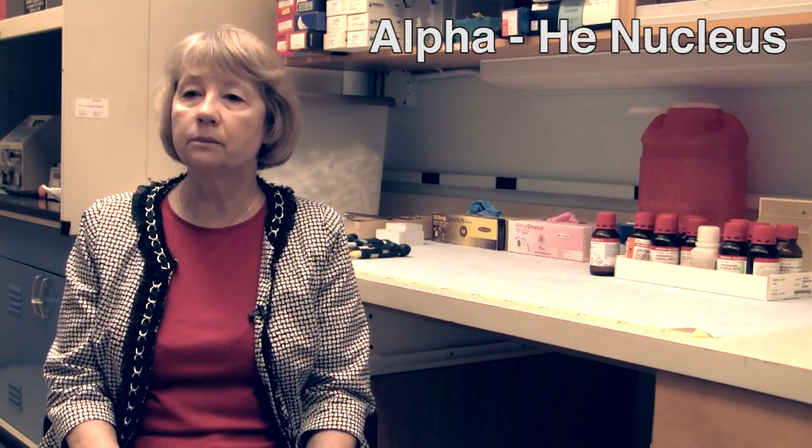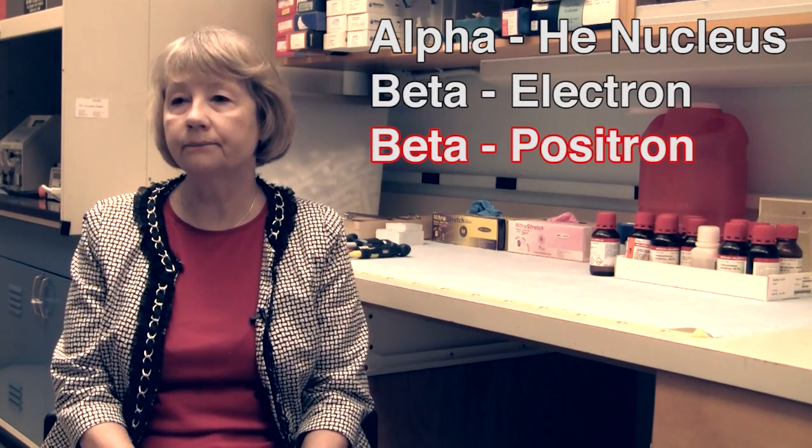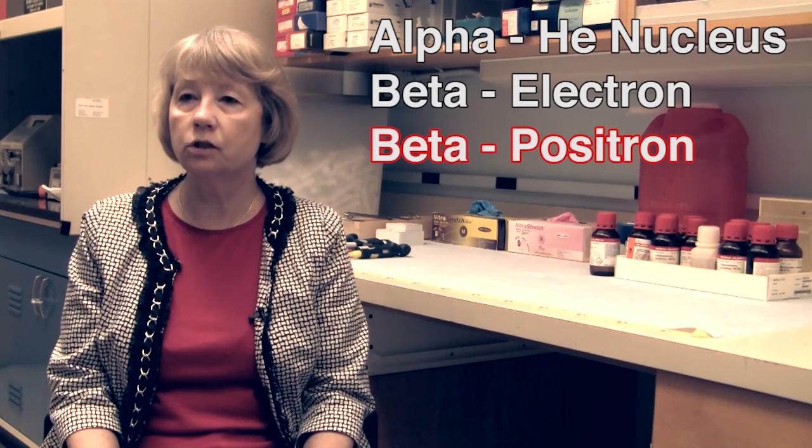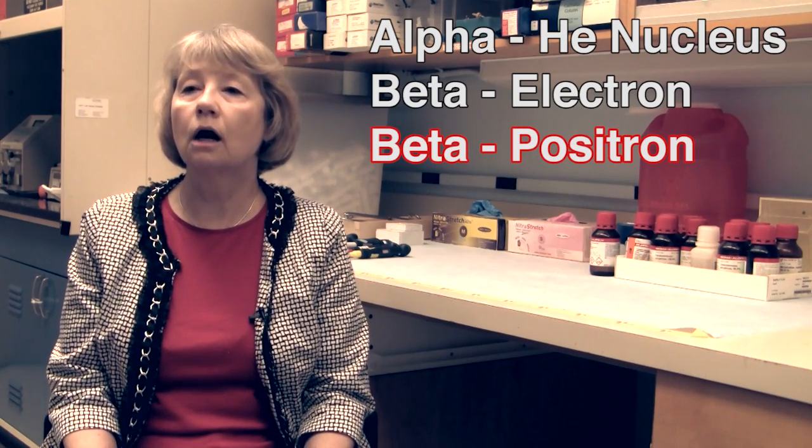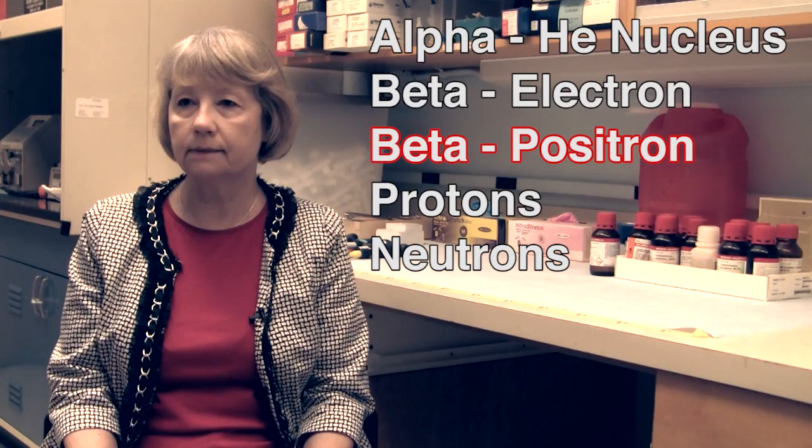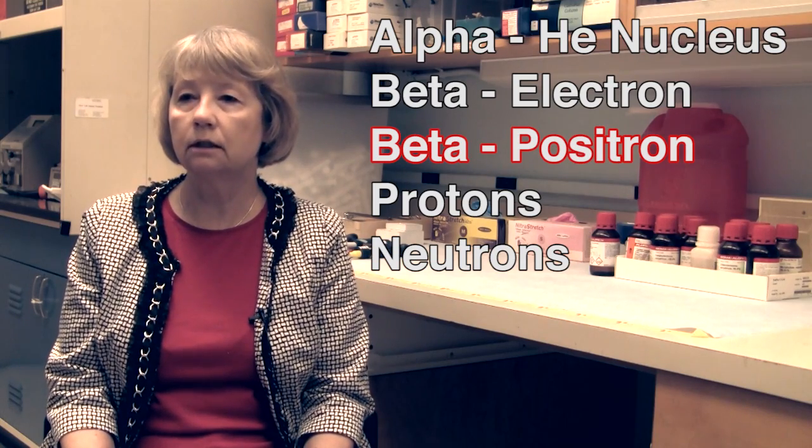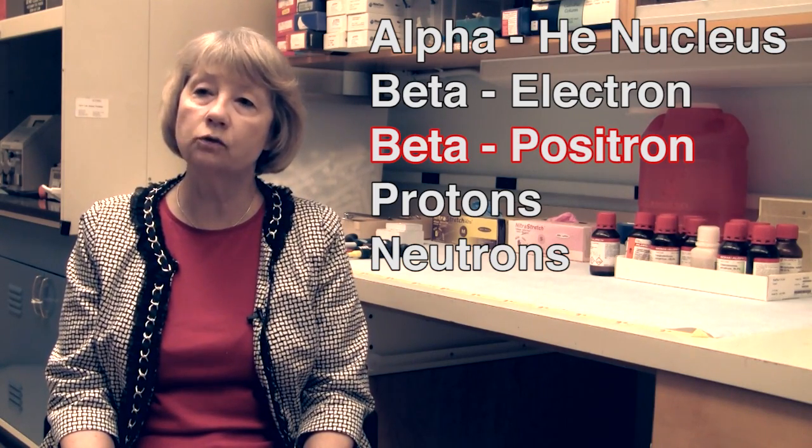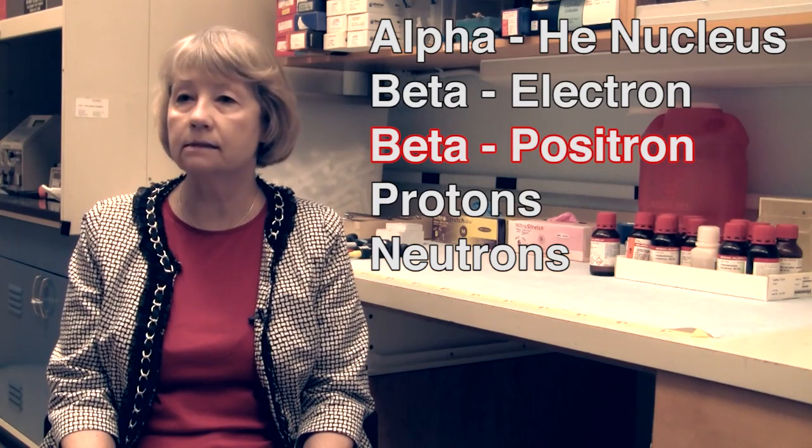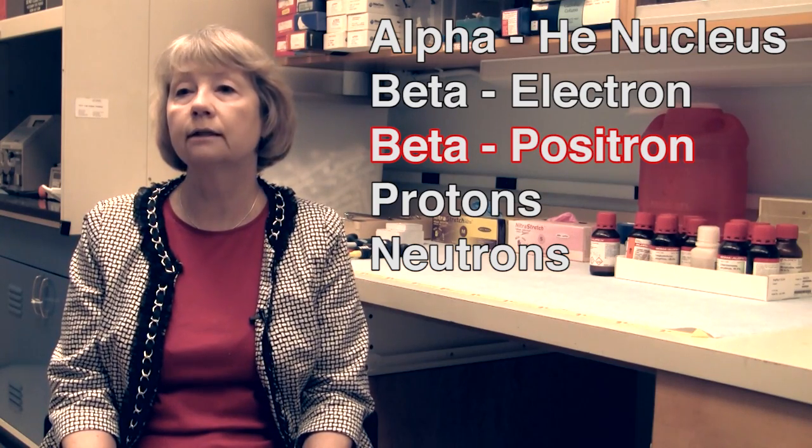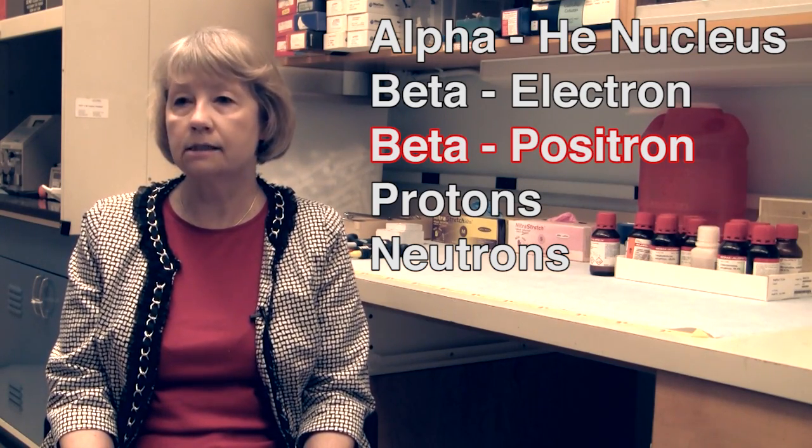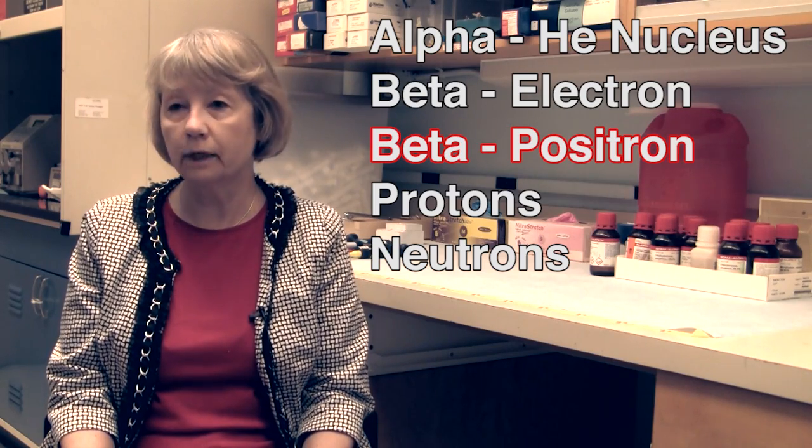The other kinds of emissions are beta, which is giving off electrons, or protons, or neutrons. A neutron is a particle that has no charge, but it has a mass of 1, atomic mass of 1. A proton has a positive charge and a mass of 1.